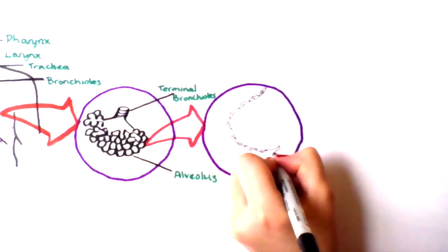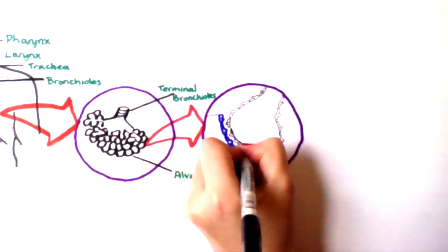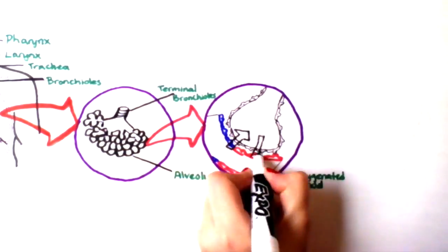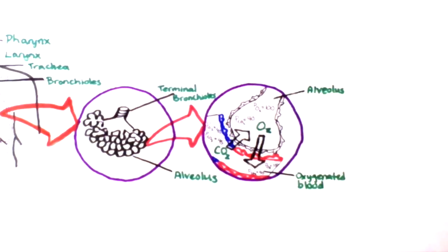The exchange of gases between the alveoli and the blood occurs by simple diffusion. Oxygen diffuses from the alveoli into the blood down its pressure gradient from 100 millimeters of mercury down to 40 millimeters of mercury in the blood. Carbon dioxide diffuses from the blood into the alveoli down its pressure gradient from 45 millimeters of mercury to 40 millimeters of mercury.